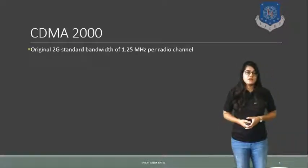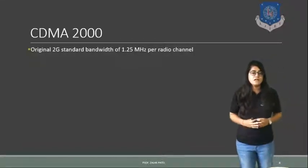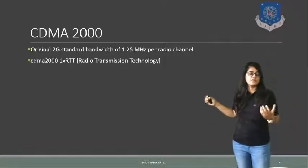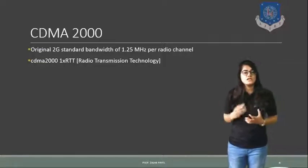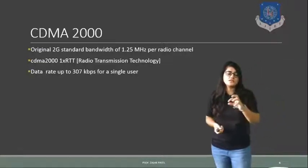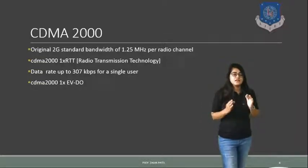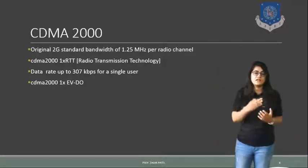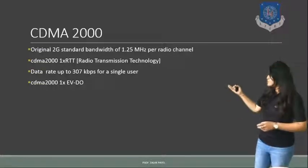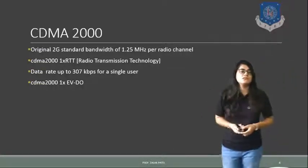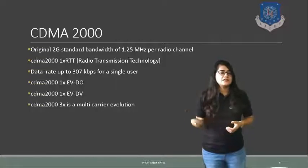The next standard is CDMA 2000. It is the original 2G standard, with a bandwidth of 1.25 MHz per channel. CDMA 2000 provides Radio Transmission Technology, referred to as RTT — here 1x RTT, 2x RTT can be used. For 1x RTT the channel width is 1.25 MHz, and for 3x RTT three channels of 1.25 MHz are provided. It also provides the EV-DO and EV-DV standards — EV-DO is Evolution Data Only and EV-DV is Evolution for Data plus Voice. This is all about the CDMA 2000 standard.